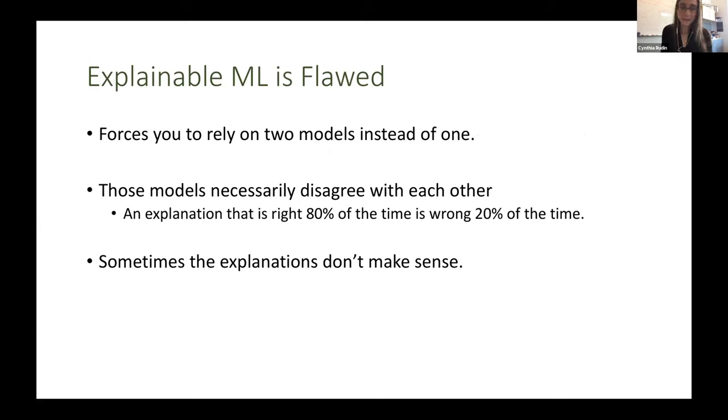They have to disagree with each other. So let's say that you have an explanation model that's right 80% of the time. Usually people say that's pretty good, but the fact is that that model is wrong 20% of the time. So what it means is that the explanations you're getting fairly often are wrong, which means you can't trust the explanations, which means you can't trust the black box, and you are back to where you started.